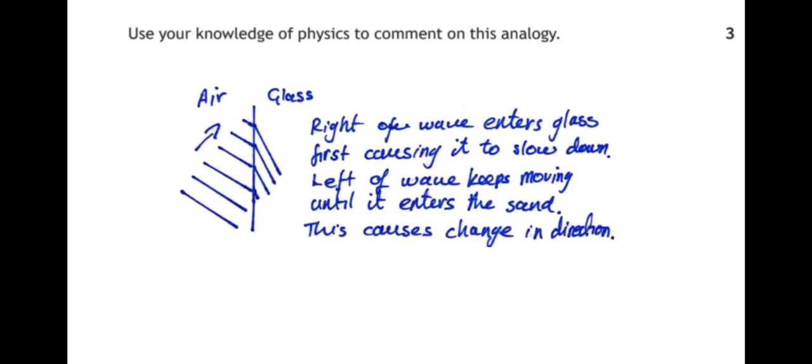And that's the same with waves as they pass from, for example, air into glass. The right-hand side of the wave enters the glass first, that causes it to slow down. The left-hand side of the wave keeps moving. And that, again, causes a change in direction. So the slowing down of the waves causes them to change direction. And this is very comparable to the case of the car on the road going into the sand at the verge.